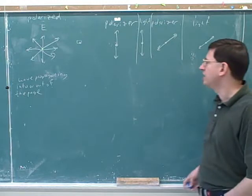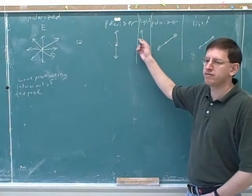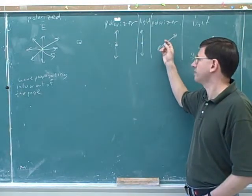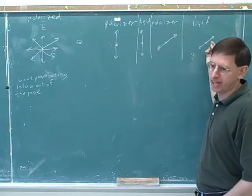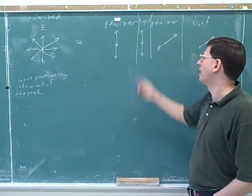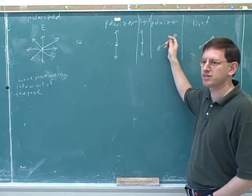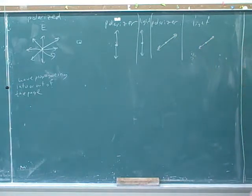So the naive person would say, originally this selected for only up-down vibrations, and this is selecting for north-east-south-west, so at the end we should have no light. But now we can see that the up-down oscillations have a component that is north-east-south-west, so there still will be some that gets through.